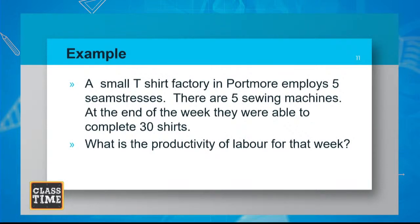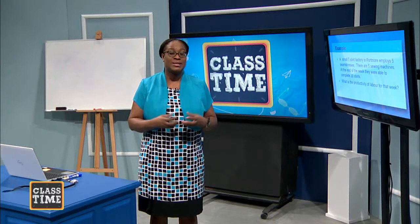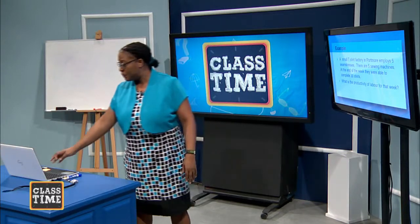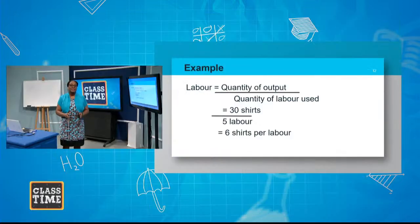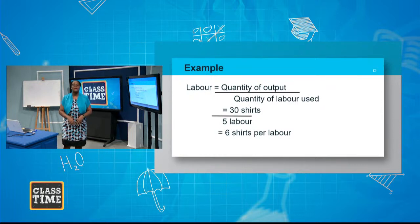Here's an example: a small t-shirt factory in Portmore employs five seamstresses and has five sewing machines. At the end of the week they complete 30 shirts. What is the labor productivity for that week? Productivity equals quantity produced divided by number of workers: 30 divided by 5 equals 6 shirts per worker. Six shirts represents the labor productivity — on average, each worker produces 6 shirts per week.